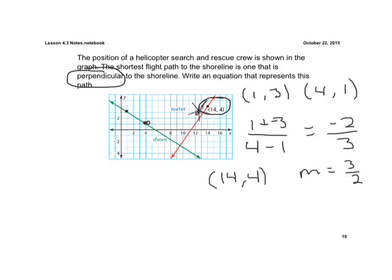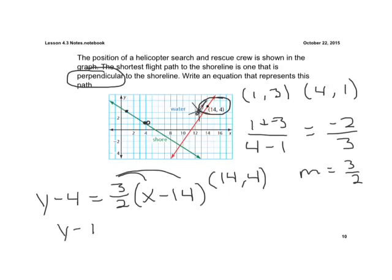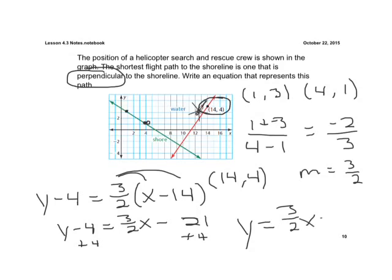Let's use point-slope form: y minus our y-coordinate 4 equals our negative reciprocal slope 3/2, then x minus 14. We distribute to get slope-intercept form. With the fraction: y minus 4 equals 3/2 x, and 3/2 times negative 14 gives us minus 21. Adding 4 to both sides, our final equation is y equals 3/2 x minus 17.